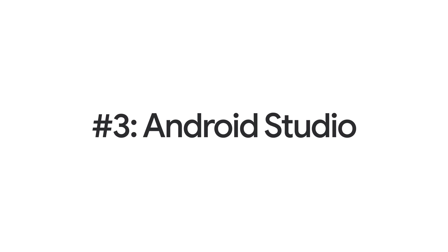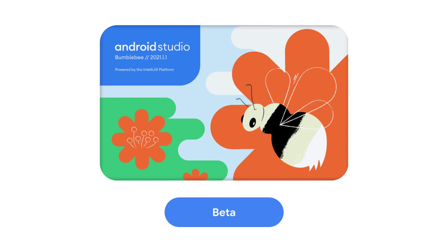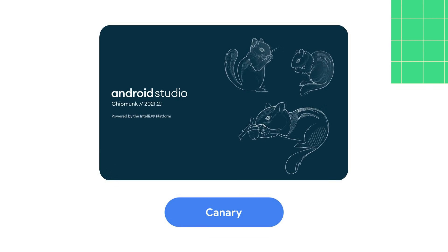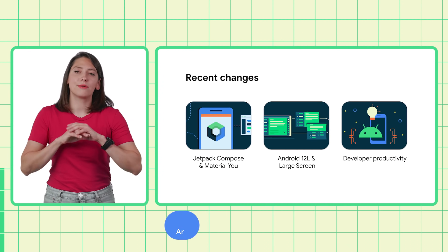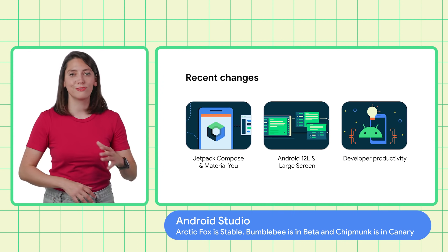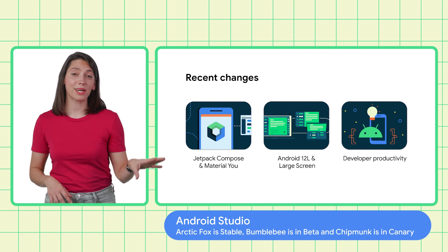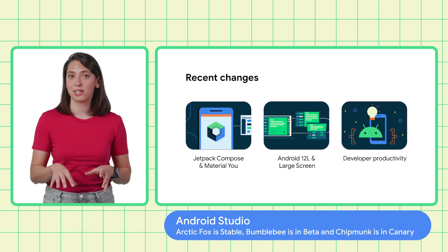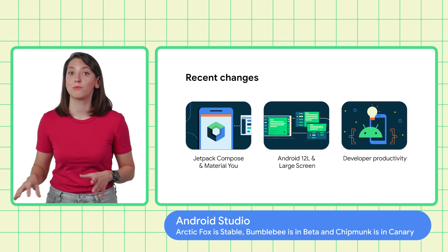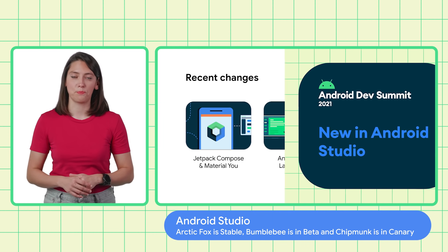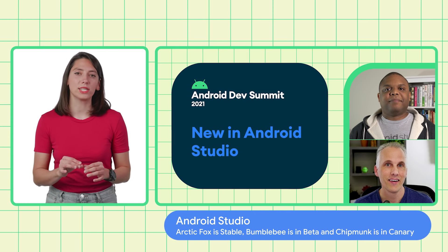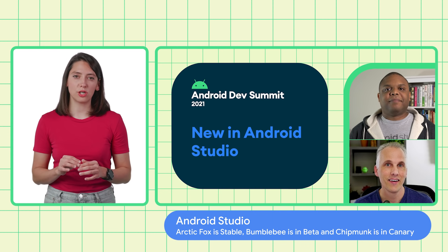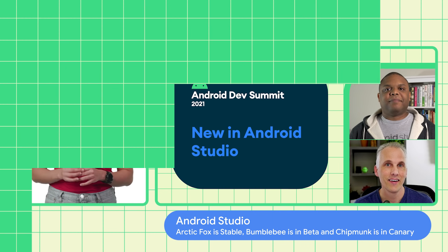And finally, Android Studio. Arctic Fox is stable, Bumblebee is in beta, and Chipmunk is in Canary — all of them bringing a bunch of new features for Jetpack Compose and Material U, 12L and large screens, and developer productivity. The "What's in Android Studio" talk is a must-see.